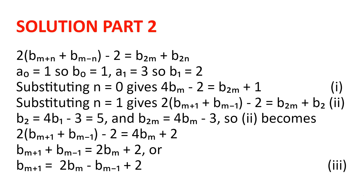Substituting n equal to 0 in our equation gives us 4·b(n) - 2 is equal to b(2n) + b(0), which is equal to b(2n) + 1. We can find the value of b(2), which is equal to 4·b(1) - 3 = 5, using equation (i).